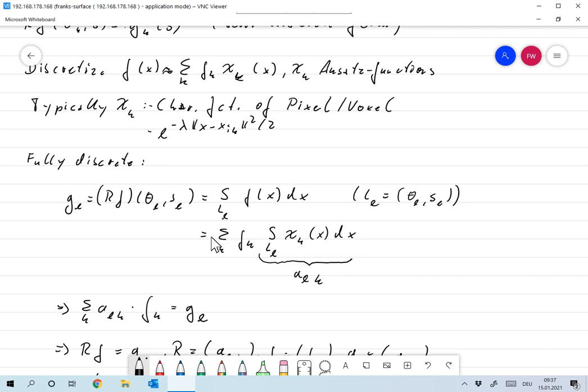plugging in the definition or the Ansatz we made. We get the linear equation, sum over all K, F_K, integral over L_L, χ_K of X, DX. Now, what is this guy over here? χ_K in our model is the characteristic function of a pixel. This is a line integral. So if I denote this by A_LK, then this is nothing but the length of the intersection of the line L_L with pixel K.